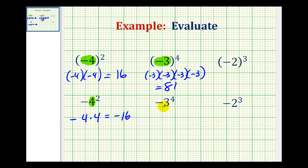But below we have the opposite of positive three raised to the fourth power. So the base is positive three in this example. So if we expand this, we're going to have the opposite of three times three times three times three. And the product here is going to be negative 81.